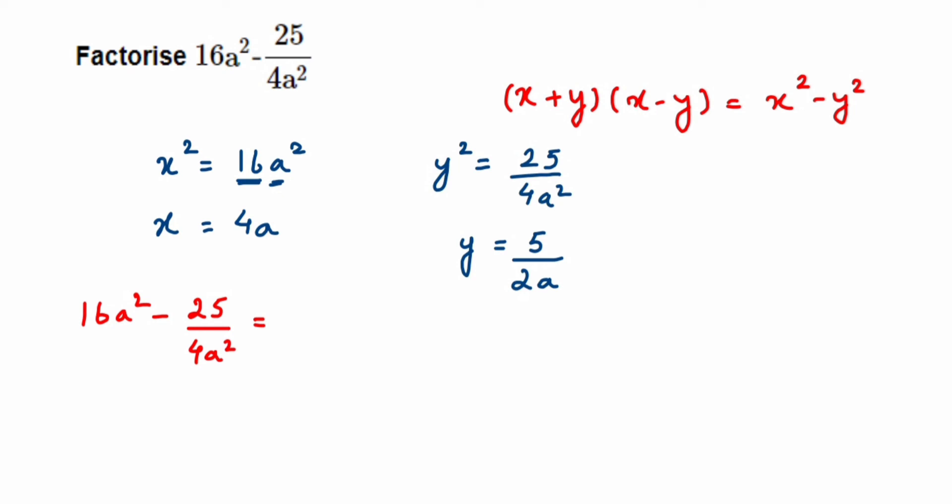We're going to substitute. This equals, or you can rewrite this as, (4a)² minus (5 upon 2a)² which is x² minus y².